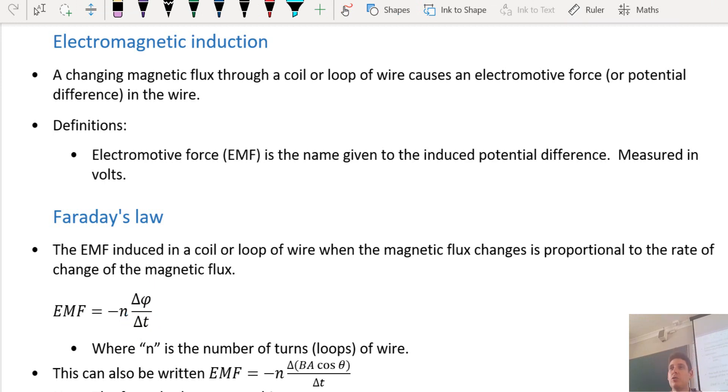You can also write this because we learnt the flux formula. So we can substitute instead of flux, we can write B, magnetic field strength, times A. Does anyone remember what A is? Area of the loop.